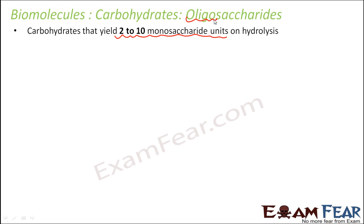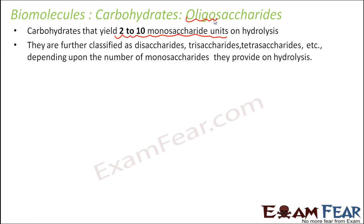Carbohydrates that yield 2 monosaccharide units are called disaccharides. Carbohydrates which yield 3 monosaccharide units are called trisaccharides, 4 is tetra, and so on. So they are further classified as disaccharides, trisaccharides, tetra, and so on, depending upon the number of monosaccharides they provide on hydrolysis.